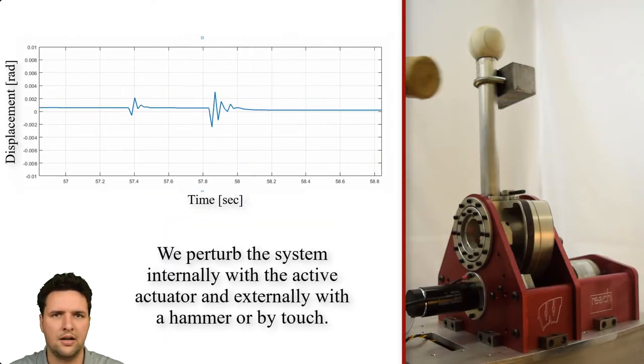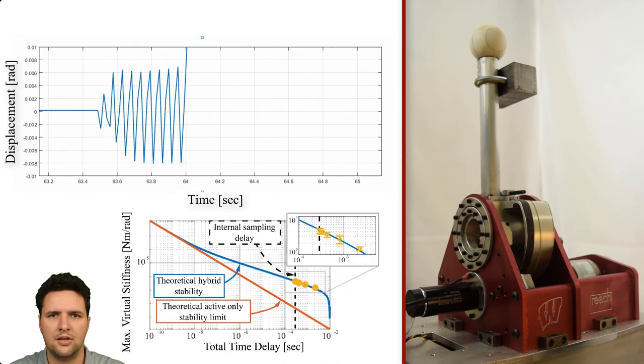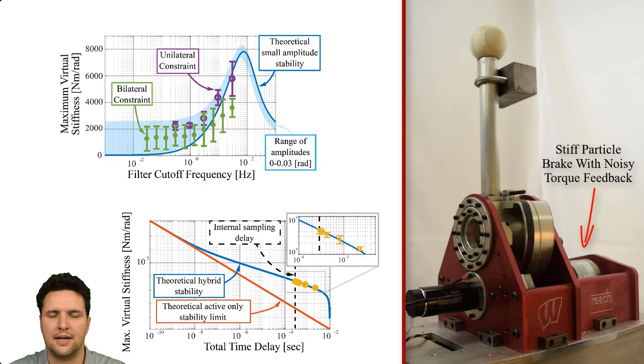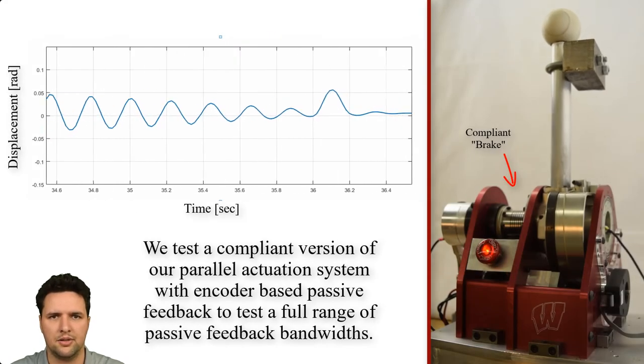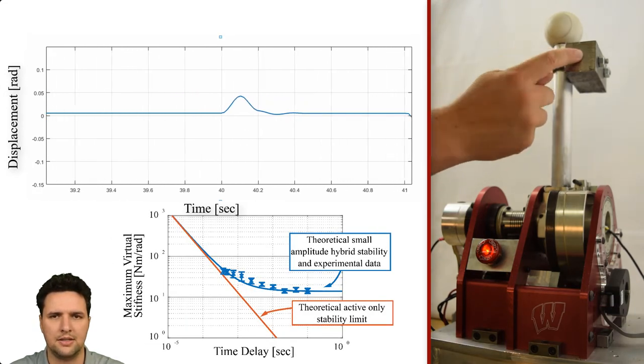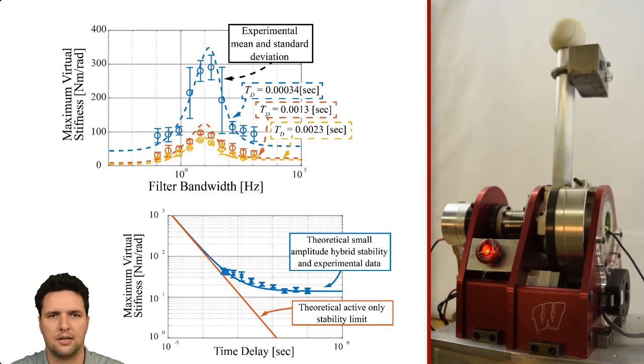We tested our hybrid actuator by perturbing the system and incrementally increasing the virtual stiffness until the system becomes unstable. Results under increasing time delays and while varying filtered feedback bandwidth agree well with theoretical results. We were limited to lower filter bandwidths in this configuration, though, due to noise in the passive actuator feedback signal. So we also tested a compliant version of our hybrid approach, using encoder feedback to estimate the brake torque and to test a wider range of filter bandwidths and time delays. Again, experimental stability results agree well with theoretical results.